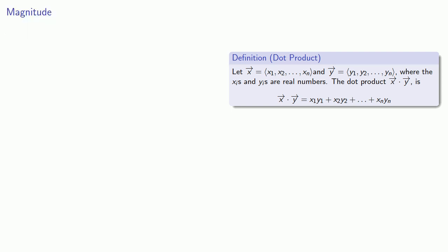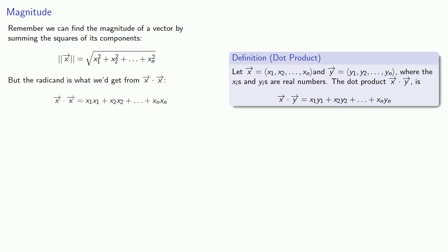The dot product allows us to express some other relationships very simply. Remember we can find the magnitude of a vector by summing the squares of its components. But notice that the radicand is what we would get if we applied the dot product of a vector with itself.